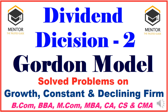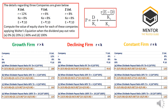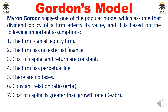In this video I will cover Gordon's model along with the concept and assumptions, and I will cover solved problems. This question was given in the first video as an exercise problem in Walter's model — I hope you have done it and can cross-check your answer here. The three types of situations — growth, constant, and declining firm — are given and solved.